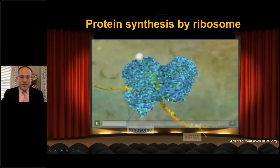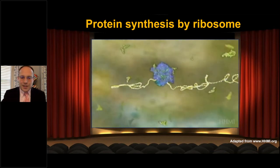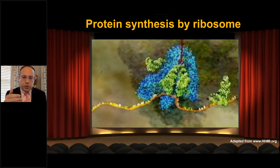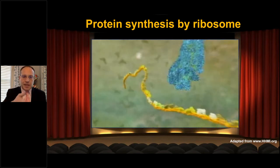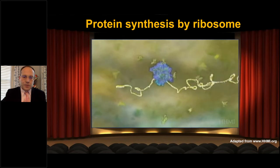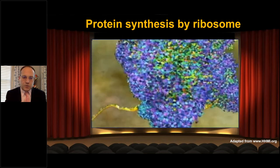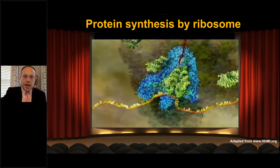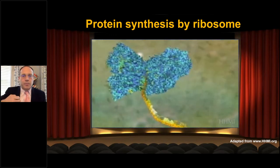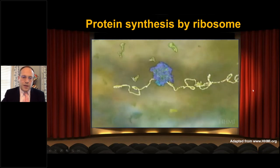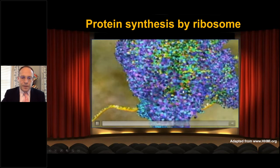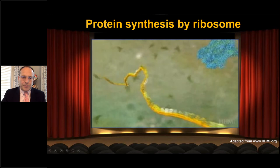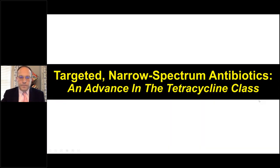A picture is worth a thousand words, so let's look at protein translation in action. The messenger RNA is the yellow stringy element; we're looking inside the ribosome at the A-site and P-site. The 30S ribosome is bound to messenger RNA, and the 50S ribosome is the large purple structure. The A-site, P-site, and exit-site tRNAs cycle through, while the growing polypeptide chain — the red strand at the top — elongates.